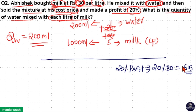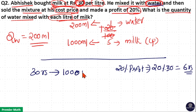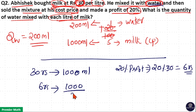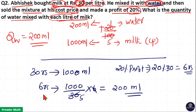This 6 rupees denotes the profit, meaning 6 rupees denotes the water amount. At 30 rupees he gets 1 litre of milk, that is 1000 ml. So at 6 rupees he will get (1000 ÷ 30) × 6, which equals 200 ml — since 6 goes 5 times into 30, and 5 goes 200 times into 1000.